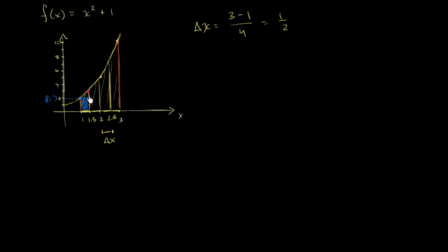Then we go over here to the left boundary of the second rectangle. We're now looking at the function evaluated at 1.5, so that is f of 1.5 — that's the height, and so we get our second rectangle. For the third rectangle, we have the function evaluated at 2, so that's f of 2, and we get our third rectangle. And then finally, for the fourth rectangle, the function evaluated at 2.5 is the height — so this is f of 2.5. In each of these, I am just looking at the left boundary of the rectangle and evaluating the function there to get the height.